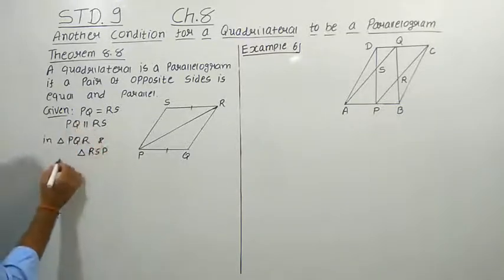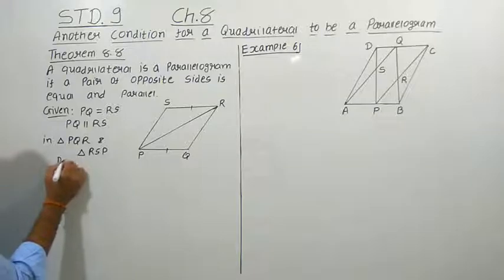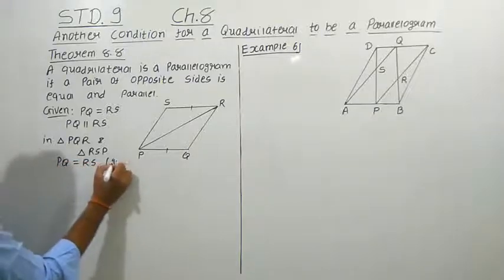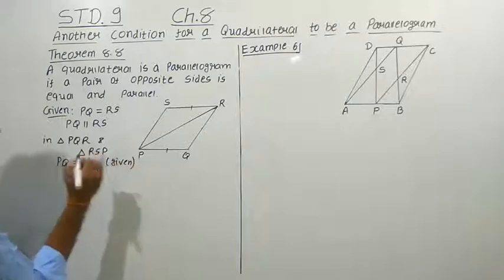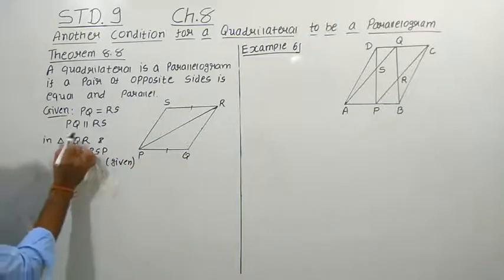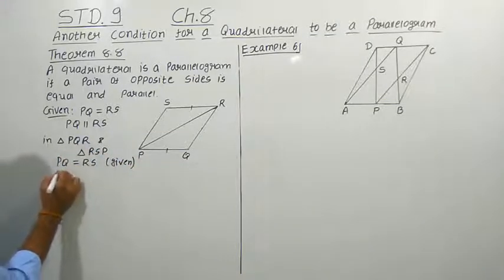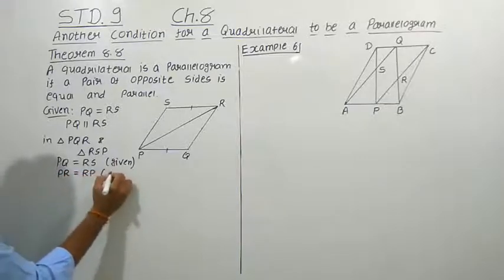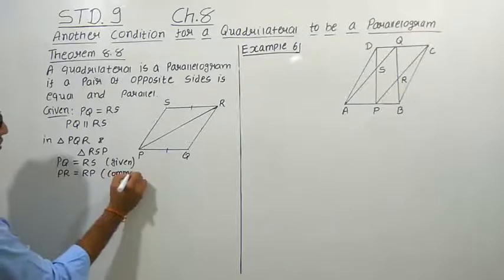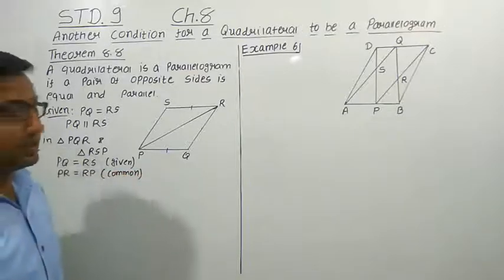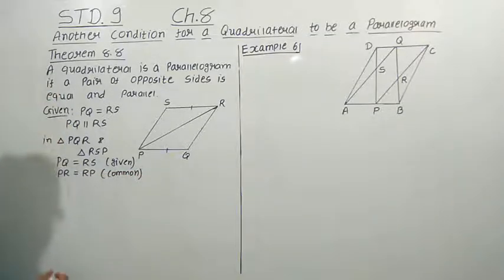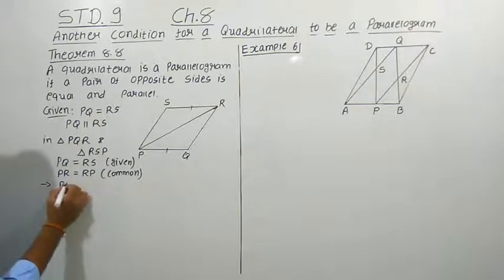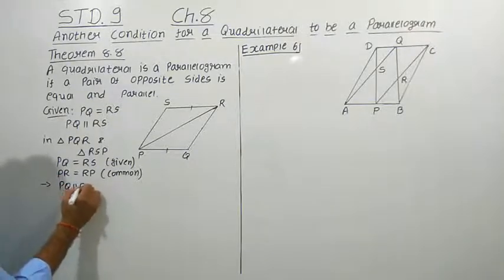One condition we have given is that PQ is equal to RS. Second condition is that RP is the common side, so PR is equal to RP — this is the common side in both triangles. We have also given that PQ is parallel to RS.